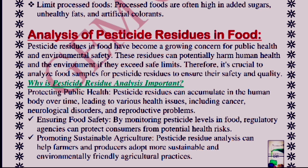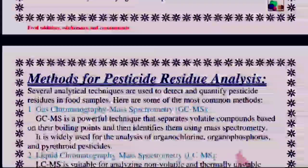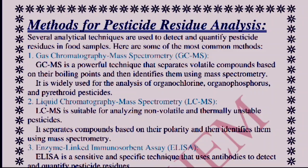The first method is gas chromatography and mass spectrometry (GC-MS). This technique involves separating volatile compounds based on their boiling point and then identifying those compounds using mass spectrometry. Analysis of organochlorine pesticides is done using this method.